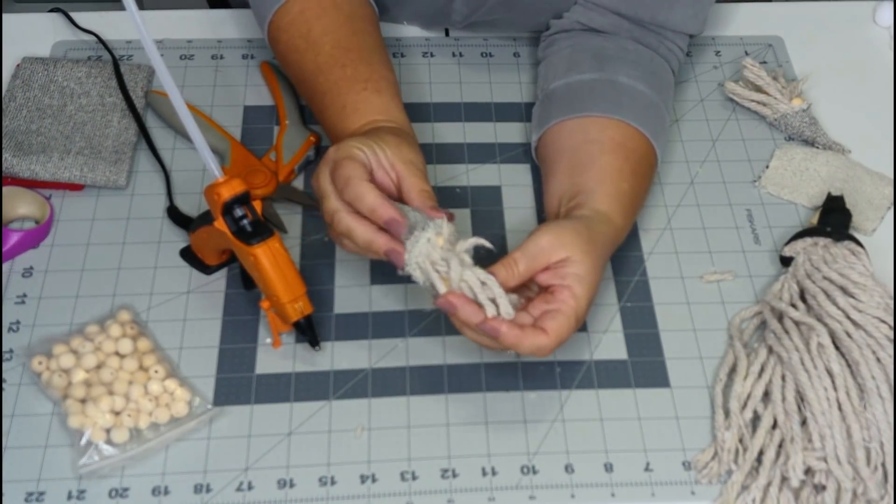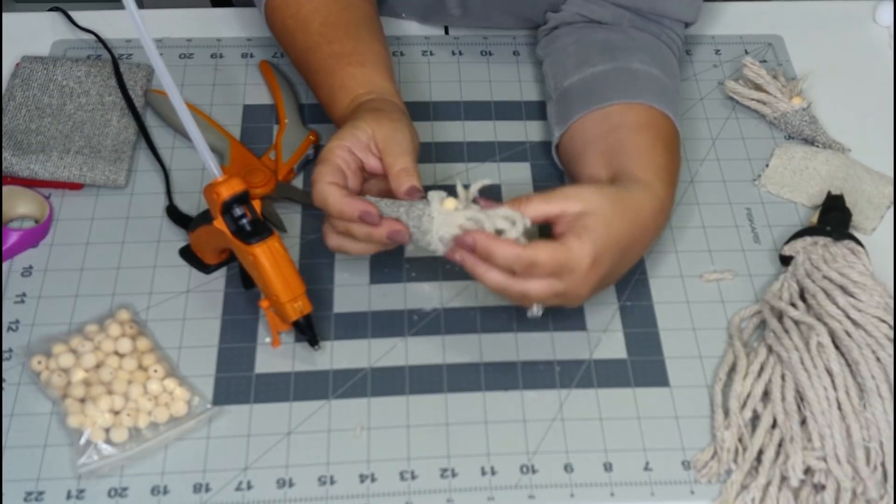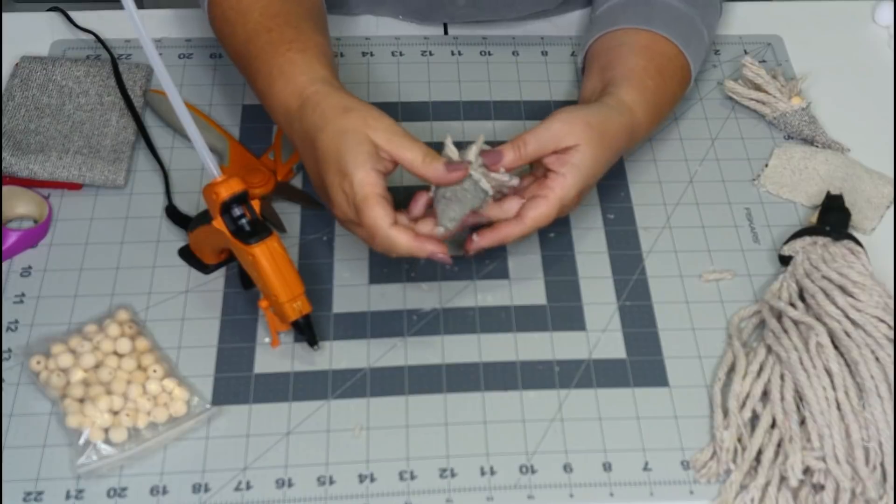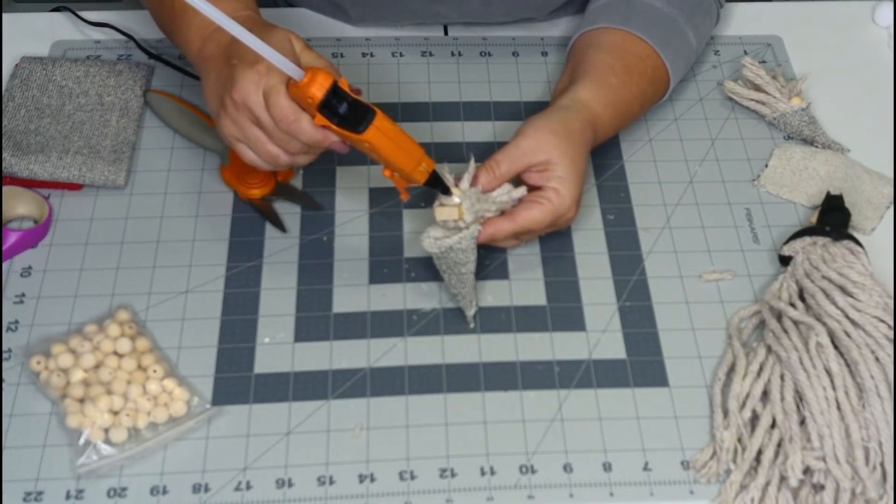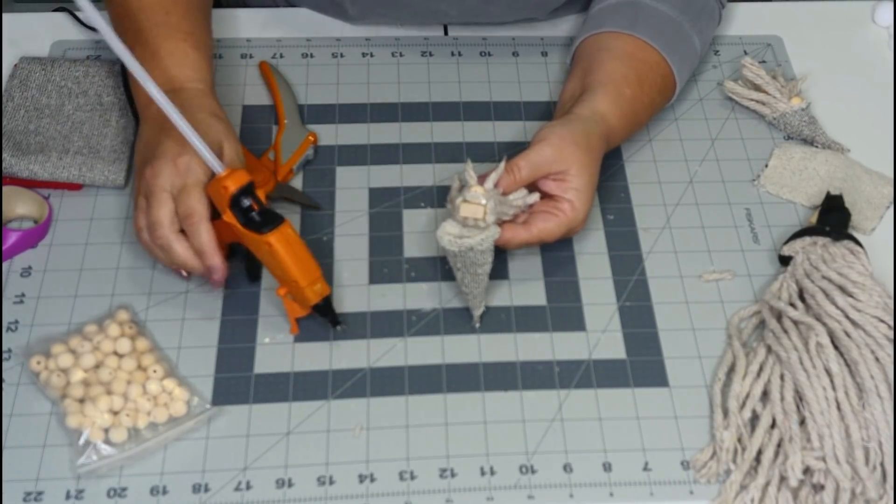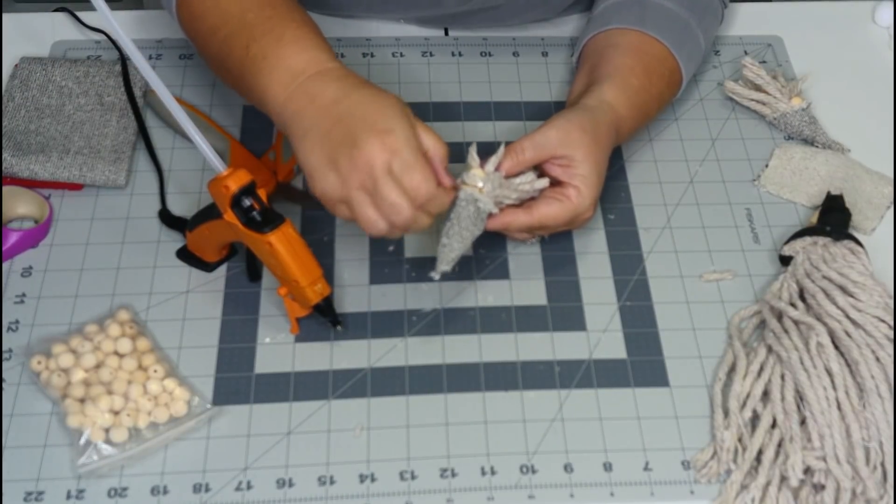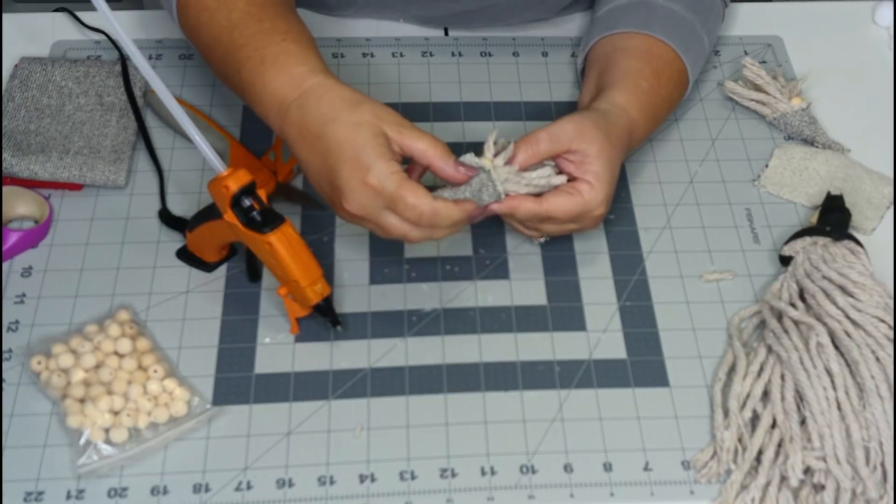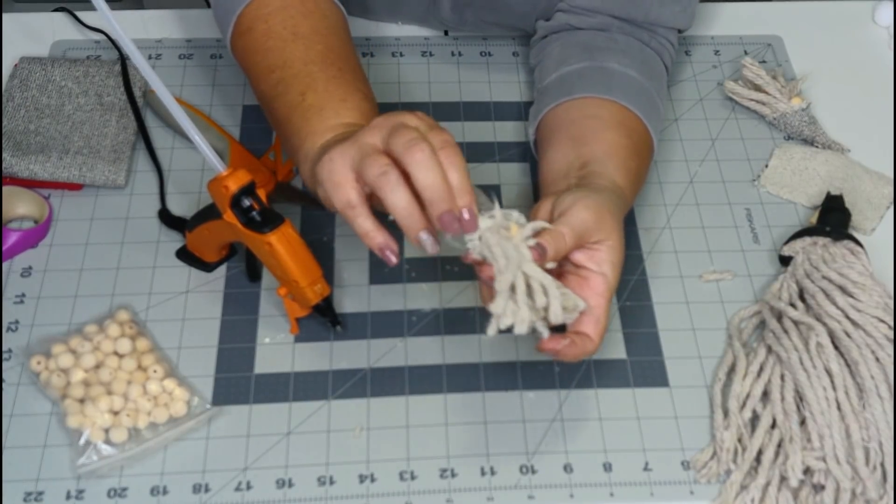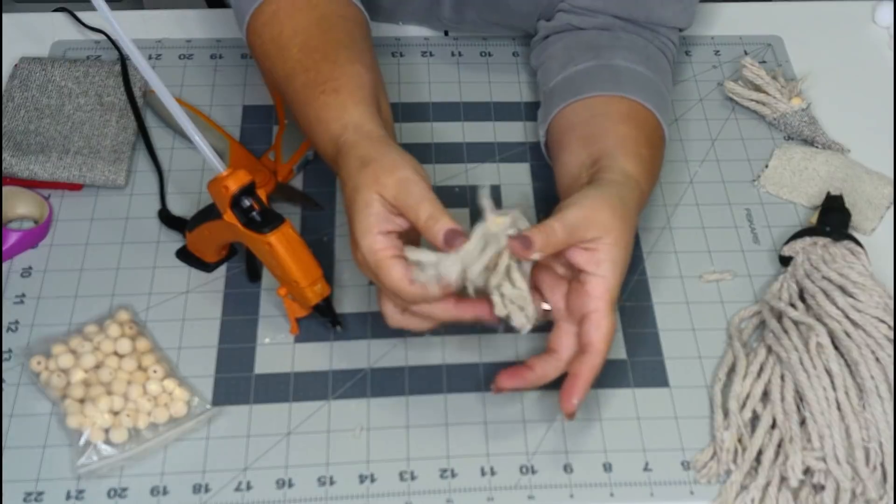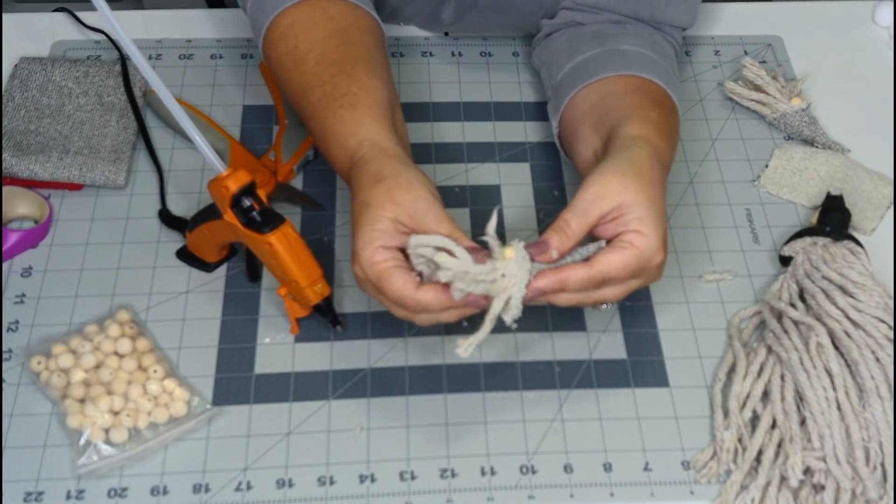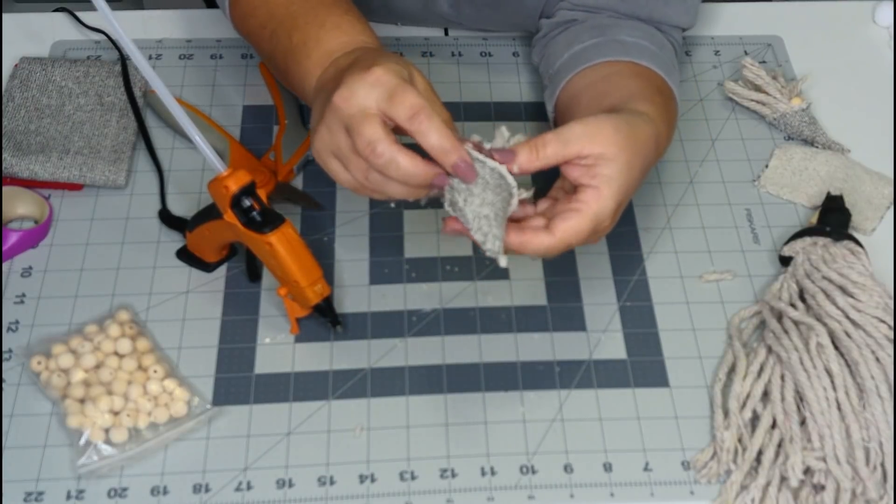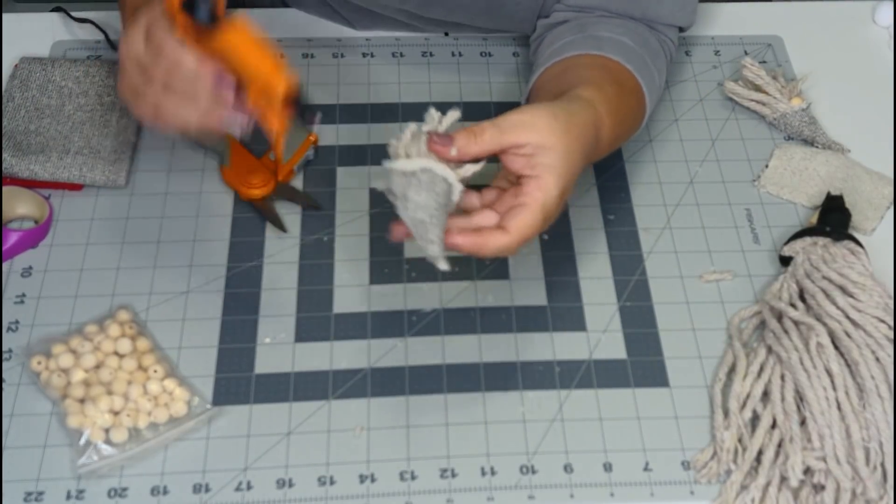So now we're just going to glue his little hat on. Isn't he cute? Oh, I just love him. He is adorable. So we'll just put a little drop of hot glue here. And I like to make his little hat come down right above his nose. But some people like to make it come up higher. This is your gnome, you make him be his own little guy, his own little personality.